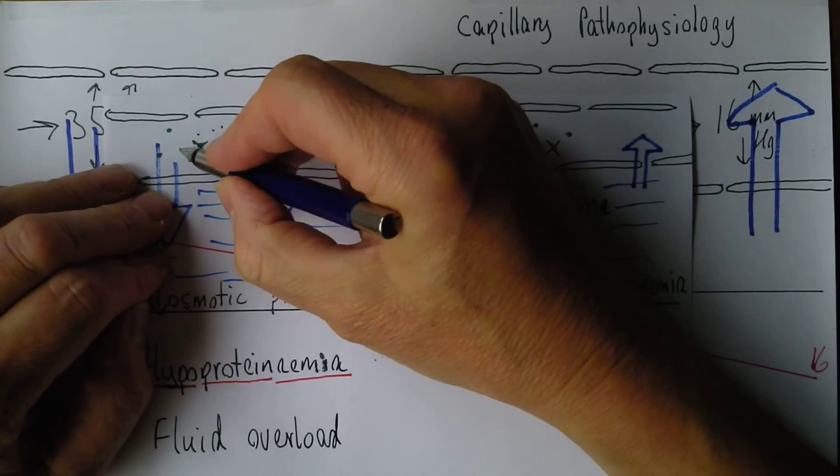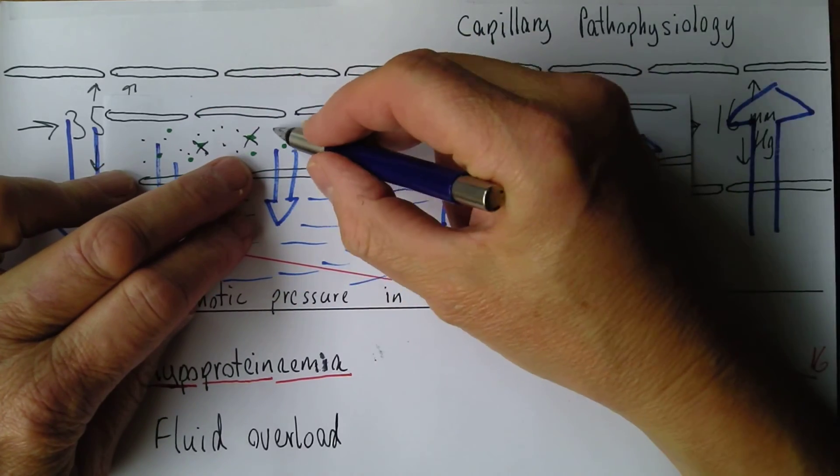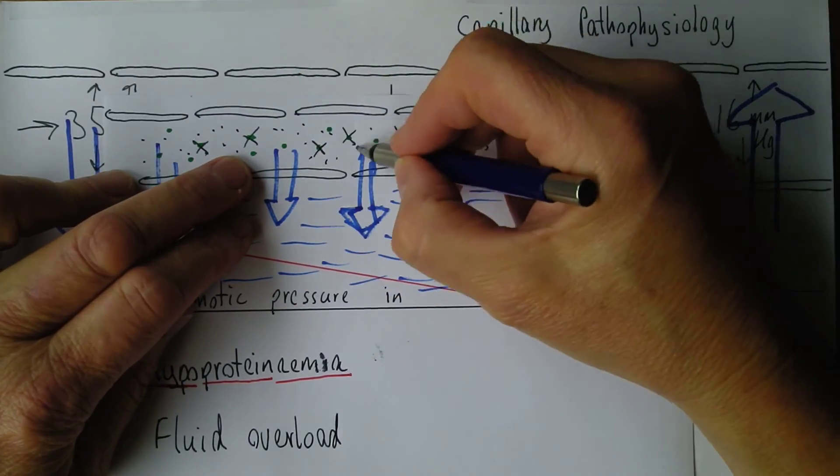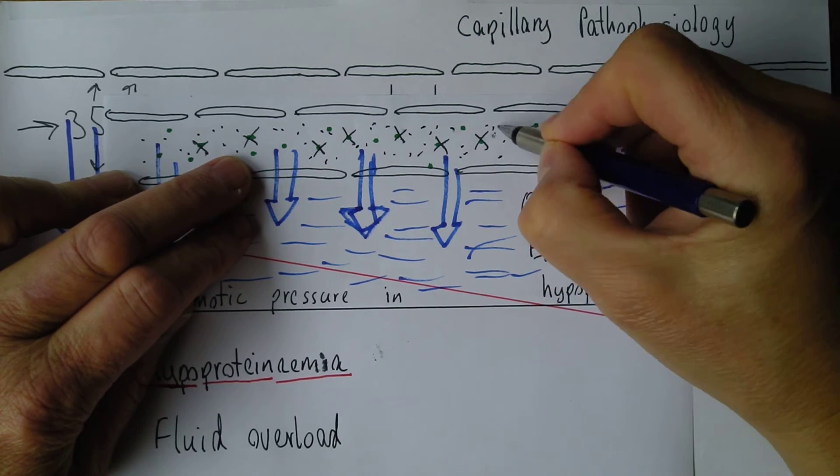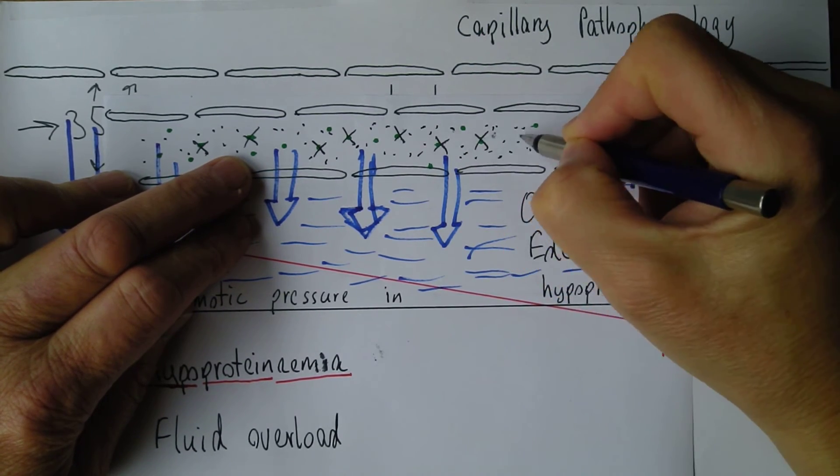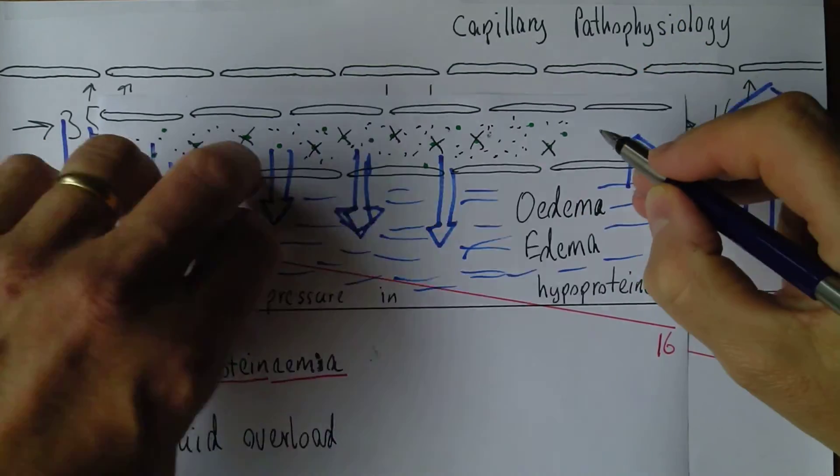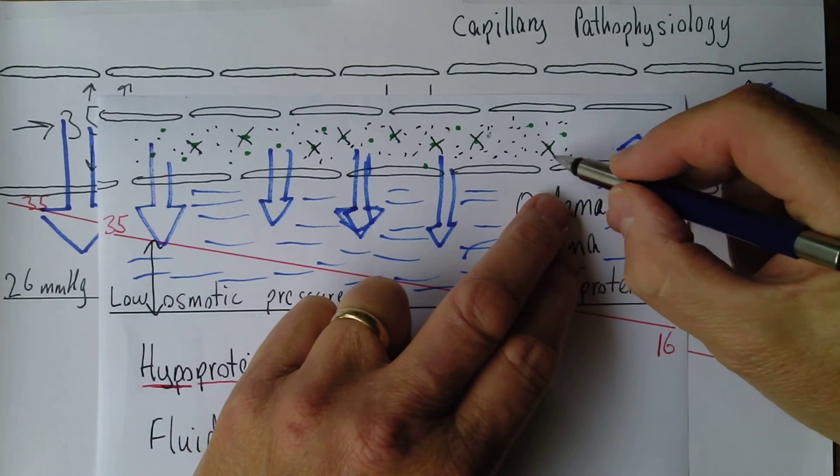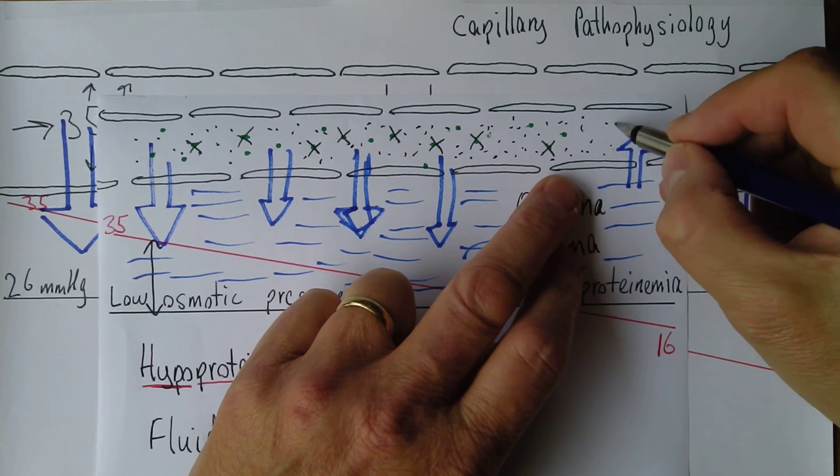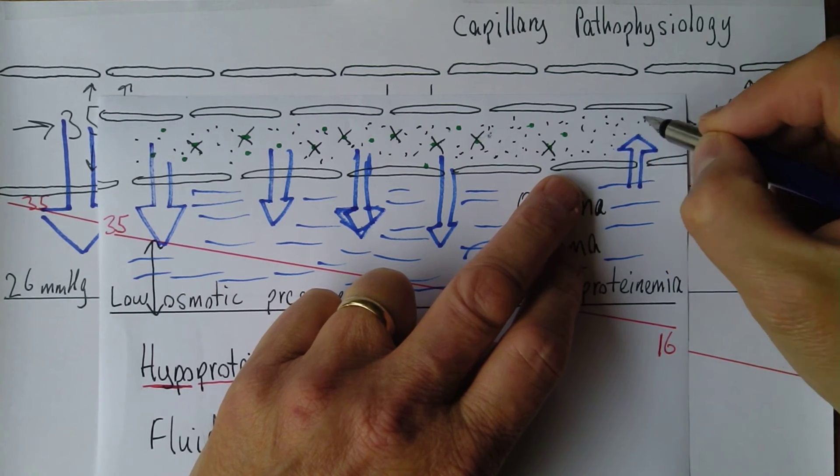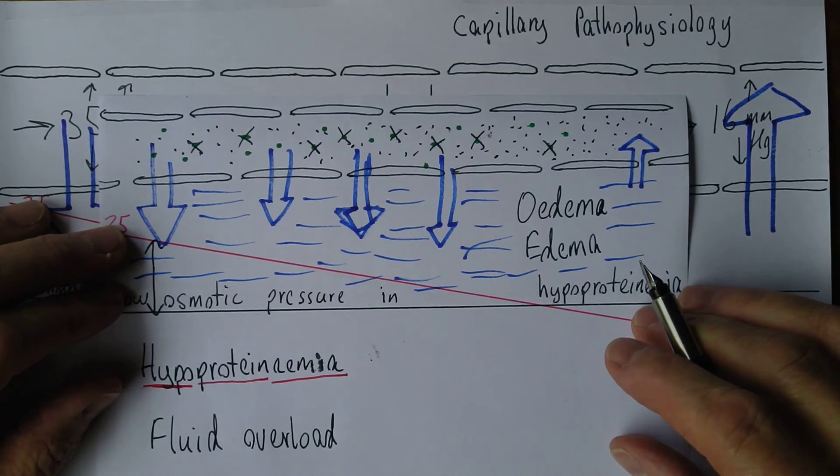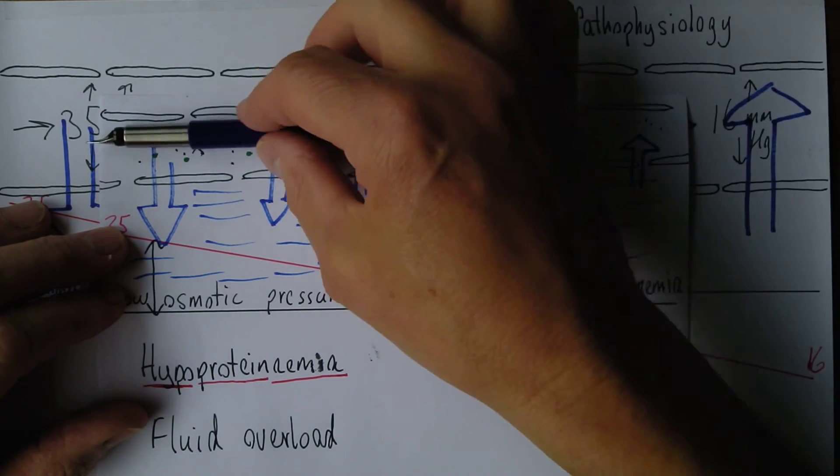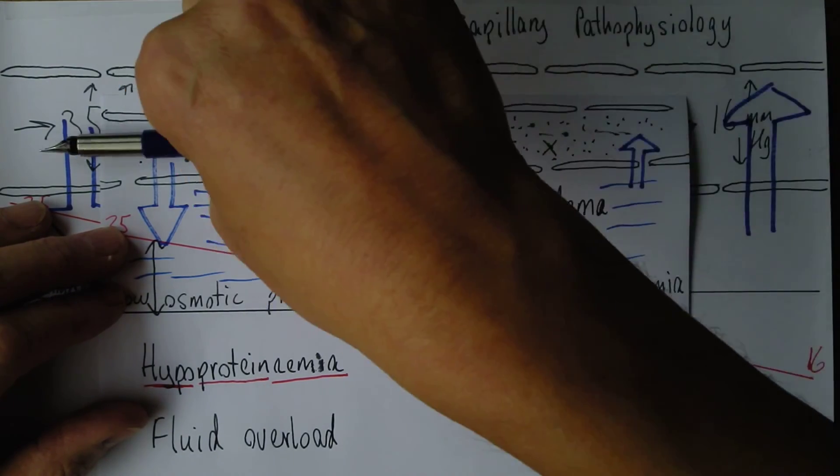Now this can happen if someone drinks too much - some psychiatric patients will drink too much, I think you call that polydipsia. Or we could give too much intravenous fluid, which is quite easy to do, especially in children. Remember children have very low blood volumes and it's very easy to over infuse. That's why we're always ultra careful not to give children too much intravenous fluid.